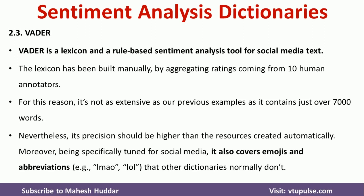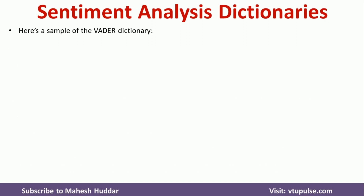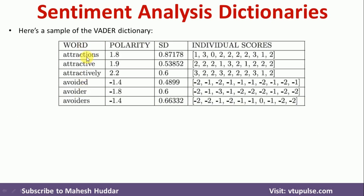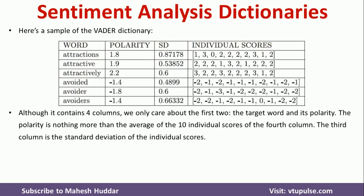One very important feature of the VADER dictionary is that it not only contains scores for English words, but also scores for emojis and abbreviations. The VADER dictionary has four columns: word, polarity, standard deviation, and individual scores. The first two columns — word and polarity — are used for sentiment analysis.